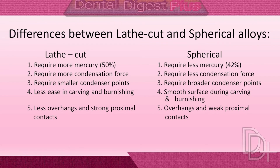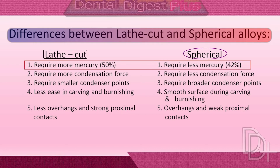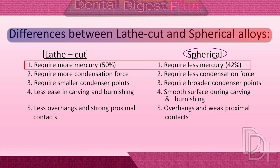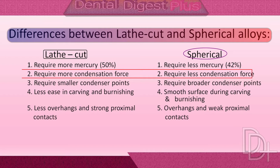For better understanding, you can see the difference between lath-cut and spherical alloy. Lath-cut alloy requires more mercury compared to spherical alloy; that is why spherical alloys are preferred, because less mercury content is desirable in the set dental amalgam. Because of the irregular shape of the lath-cut alloy particles, lath-cut alloy requires more condensation force than spherical alloy.